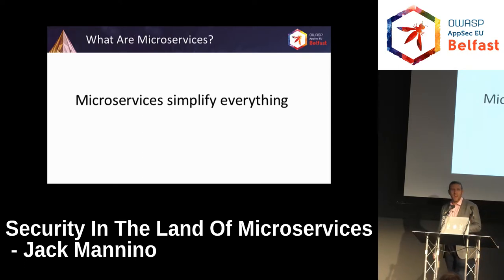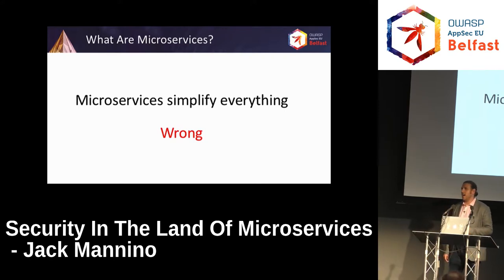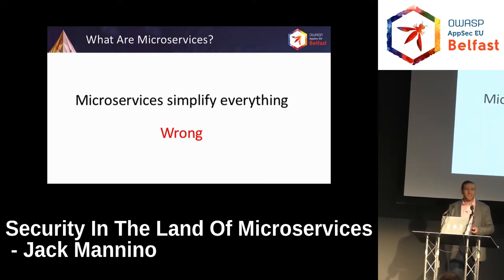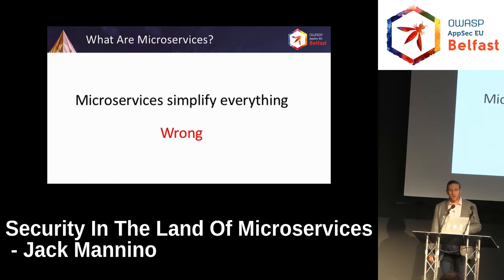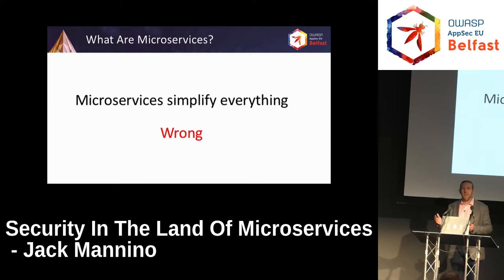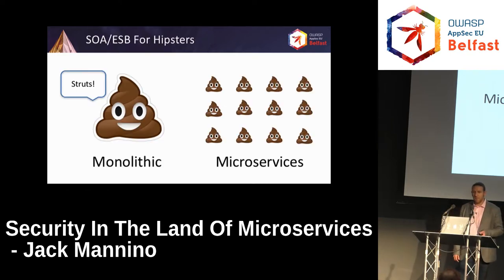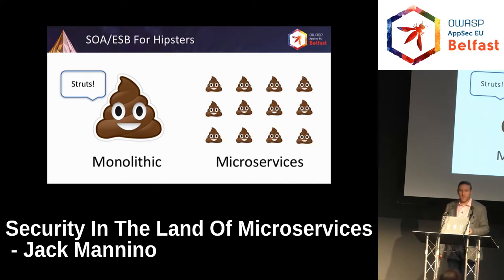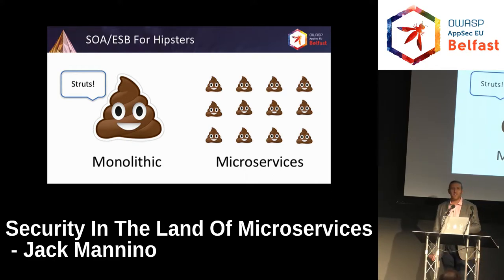So microservices simplify everything, right? Totally not true. In reality, microservices tend to add a lot of complexity and overhead. Anytime you see an architecture diagram and you start drawing more lines, you can assume there's additional complexity. Once upon a time, we had that big pile of Struts on the left — it ran in a single JVM and the data flows were pretty well defined: a client hits a web server, maybe talks to a database.